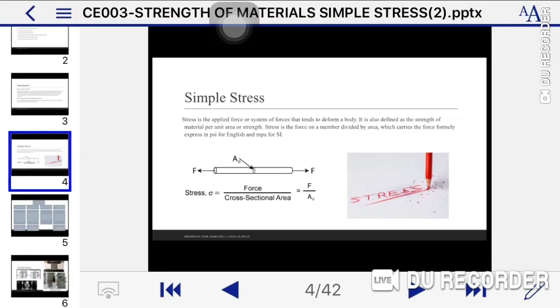Stress is the force on a member divided by area which carries the force, formally expressed in psi for English and MPa for SI. As you can see in the figure, we have a steel material. F stands for the tension force, meaning it's being pulled. The materials usually being pulled are cables like steel cables, and Ao is the cross-sectional area of the material.